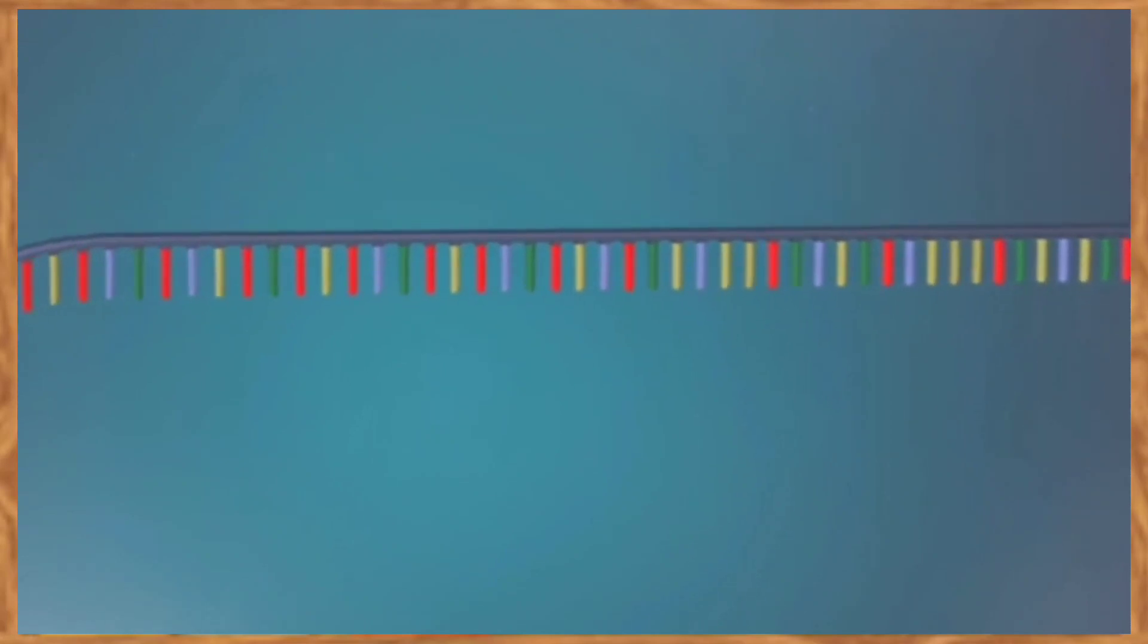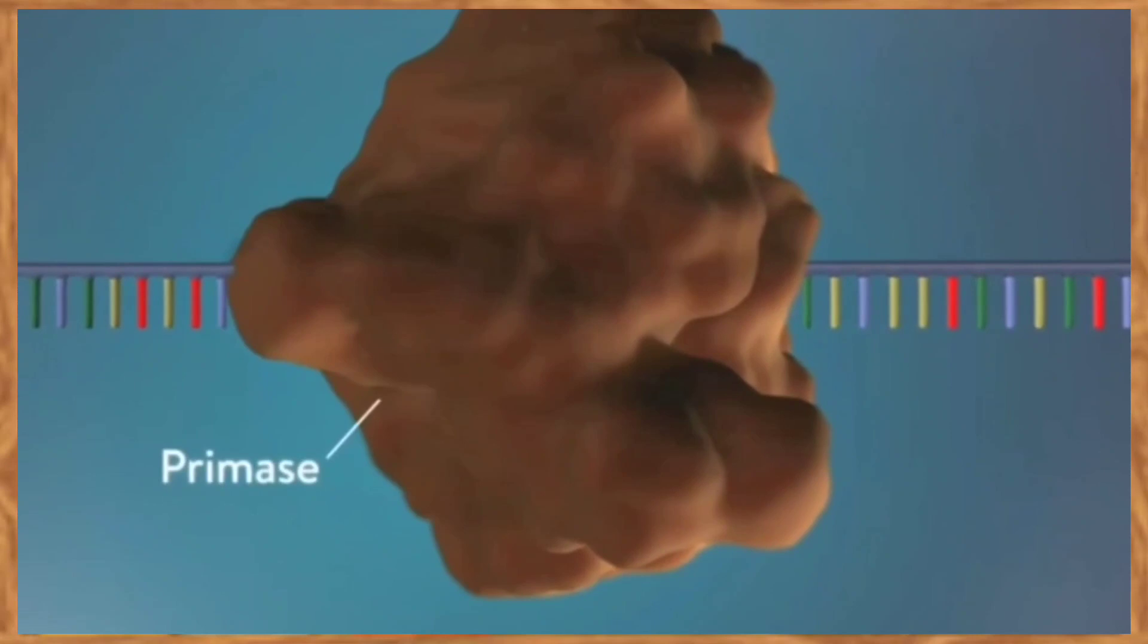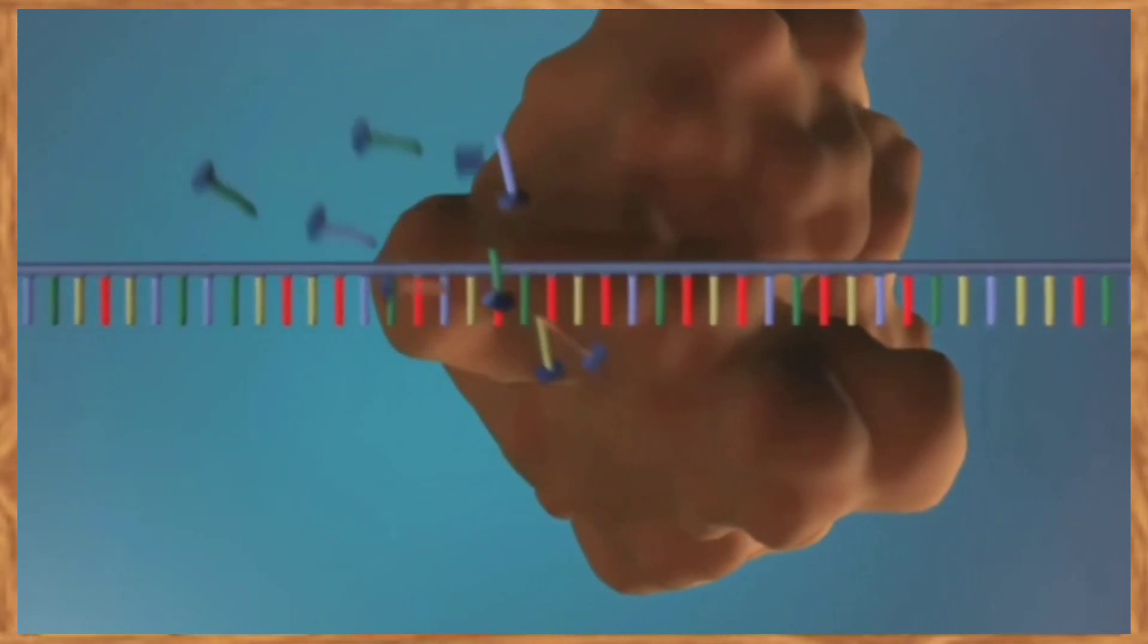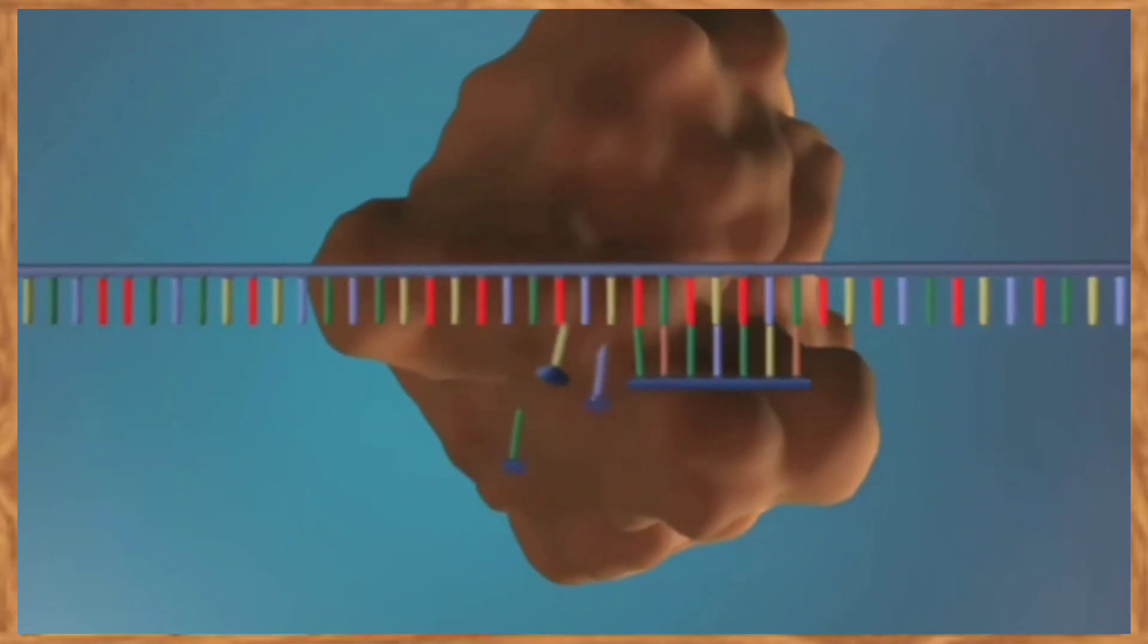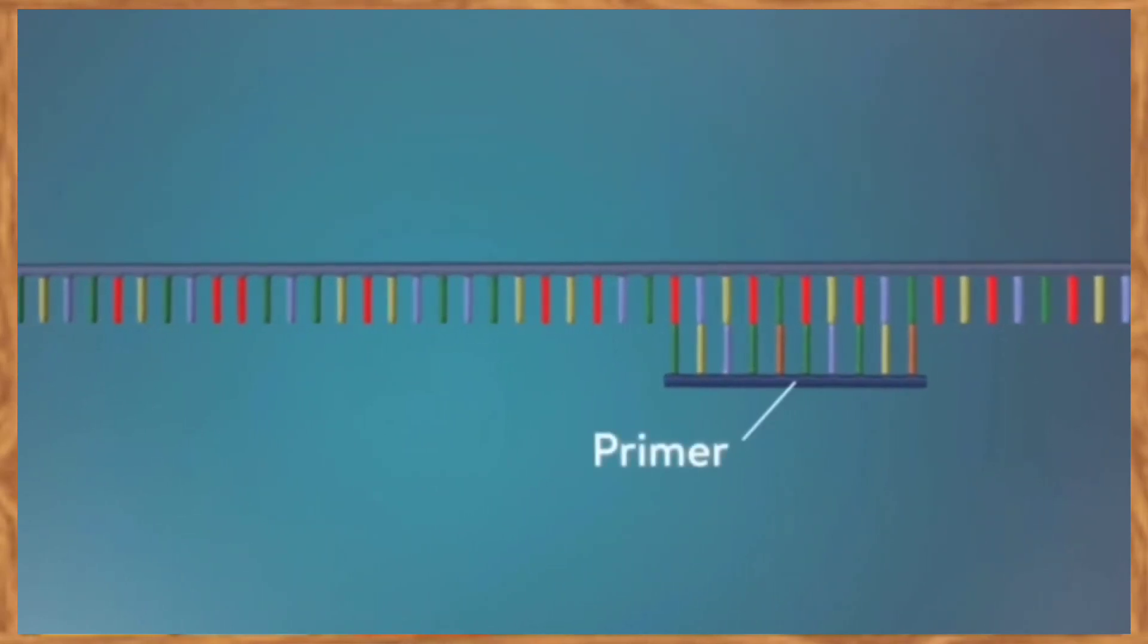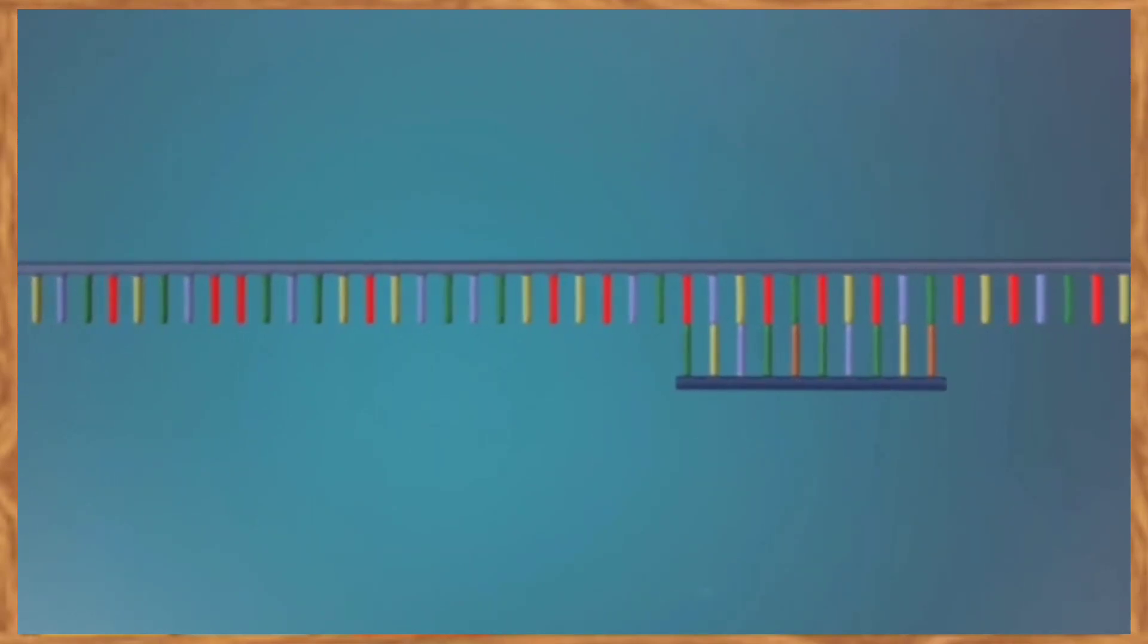An enzyme called primase starts the process. This enzyme makes a small piece of RNA called a primer. This marks the starting point for the construction of a new strand of DNA. An enzyme called DNA polymerase binds to the primer and will make the new strand of DNA.